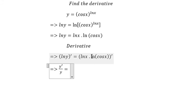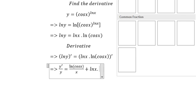Here we have a product, so we apply the product rule. First, the derivative of ln x gives us 1 over x. Then we take the derivative of ln cos x using the chain rule.